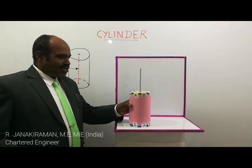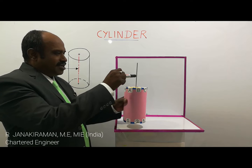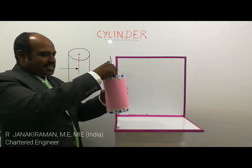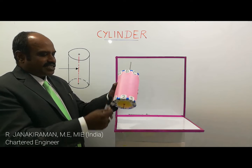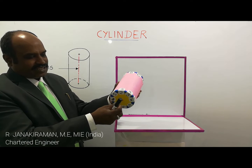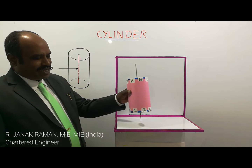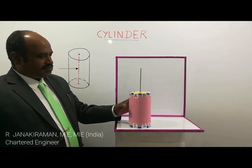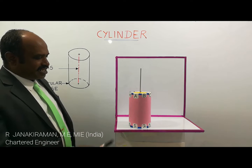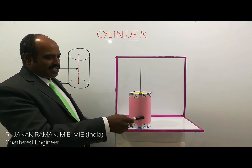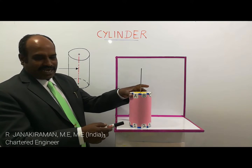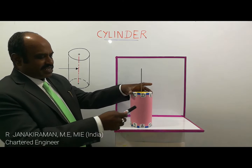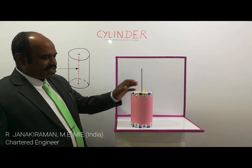Here, one thin rod is used to denote or exhibit the axis. So this is called the axis — basically it is an imaginary line. And this rose-colored part is called the lateral surface. Lateral means the outside surface of the cylinder; it is called the lateral surface of the cylinder.